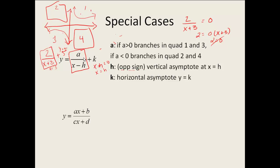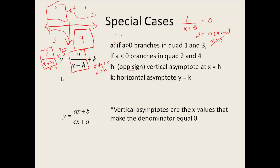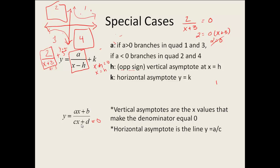Our second setup is a little different. This one we have y equals ax plus b, all divided by cx plus d. Our vertical asymptotes are the x values that make your denominator equal to 0 — these can be any variety of x values, so each time you take your denominator, set it equal to 0, and solve. And then our horizontal asymptotes are going to be the line y equals a divided by c, where a and c are the coefficients attached to our x terms.